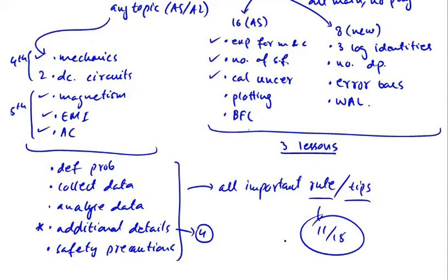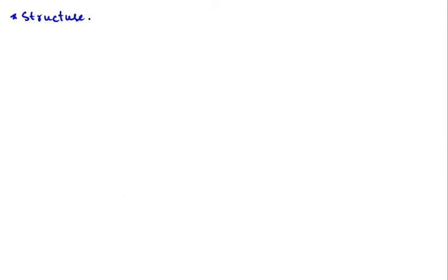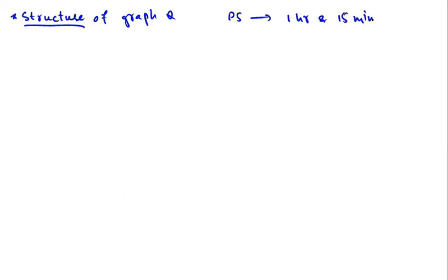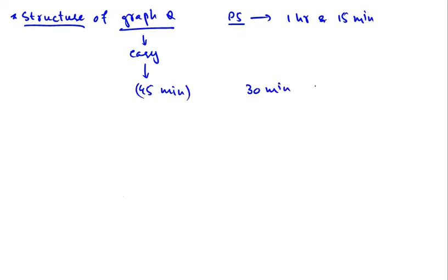This was the brief introduction to paper 5. Now let's start our lesson formally. In this lesson, I'll first explain the structure of the graph question. It's very important that you know and fully understand it, because in paper 5, the total time allowed is one hour and 15 minutes. You should always start with the graph question because it is relatively easy but time consuming — try to finish it within 45 minutes and spare at least 30 minutes for the planning question.